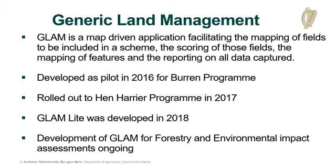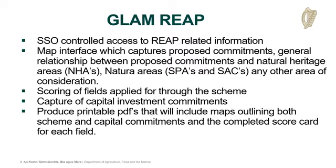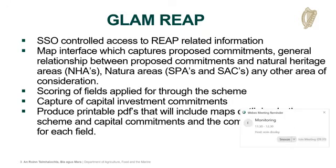GLAM is a facility whereby you can map features, label fields, draw polygons, and split fields. You can split parcels and label the two fields you've created — for example improved grassland, wet grassland, peatlands. You can draw polygons to indicate features, draw lines for fencing or boundaries within fields, and draw point actions such as a well, a gate, or nest boxes.